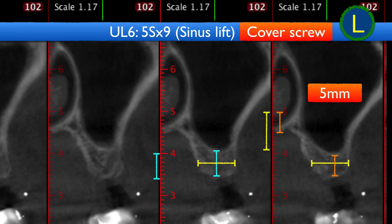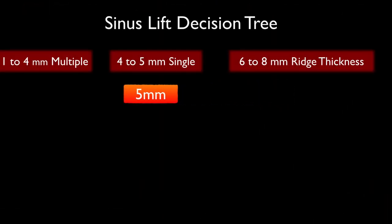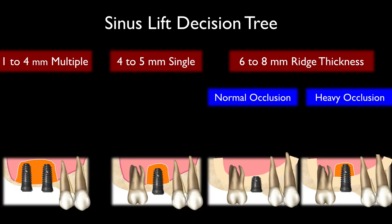We need to decide whether we want to use a short implant or do some bone grafting with a sinus lift. The decision-making tree for this kind of case follows the framework Dr. Holmark discussed for sinus lift decisions. For this case it's 5 mm, so it falls into that category. For 4 to 5 mm with a single implant — if you have 6 to 8 mm ridge thickness with normal occlusion, you can proceed directly. But for heavy occlusion, you may want to do a sinus lift.